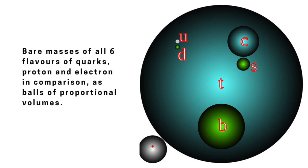Quarks aren't coloured in the normal sense, but in the theory of quantum chromodynamics — the theory that describes the action of the strong force — they do have different types of colour charge, which affects how they interact via the strong force. The flavours of quarks, on the other hand, refer to their weak charges, and so govern how they interact via the weak force.